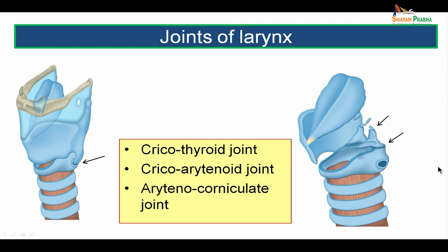The joints of the larynx: there are three named joints connecting the laryngeal cartilages. The cricothyroid joint is the joint between the inferior horn of the thyroid cartilage and the cricoid cartilage at the junction between the anterior arch and the lamina — a synovial type of joint. The cricoarytenoid joint is formed between the upper border of the lamina of the cricoid cartilage and the base of the arytenoid cartilage — a synovial joint which permits both rotatory and gliding movement. The third is the arytenocorniculate joint between the apex of the arytenoid cartilage and the corniculate cartilage — also a synovial joint.